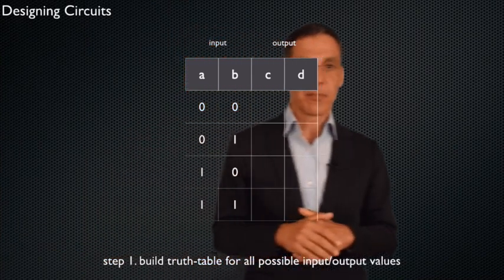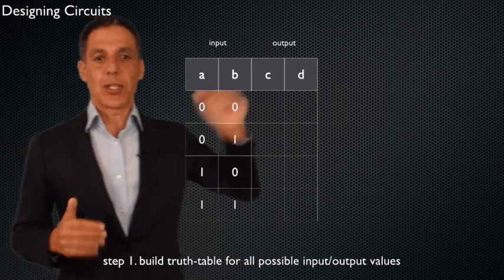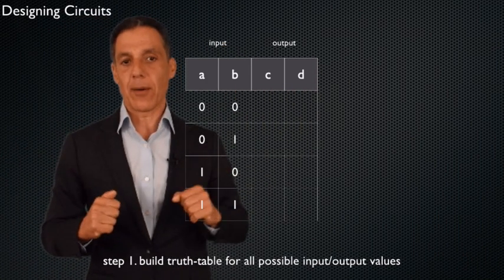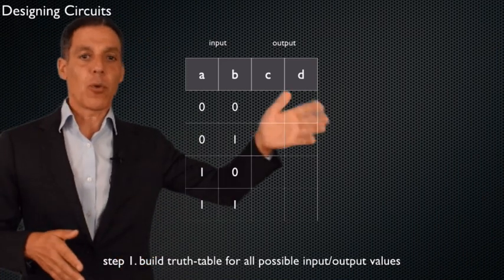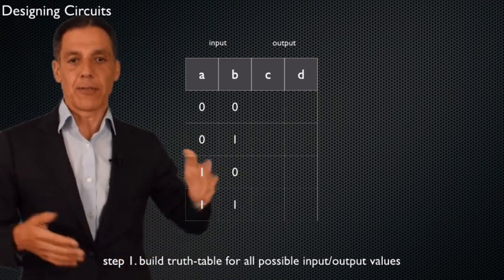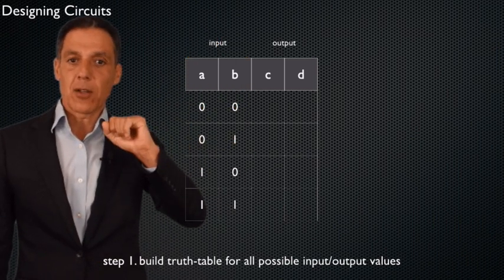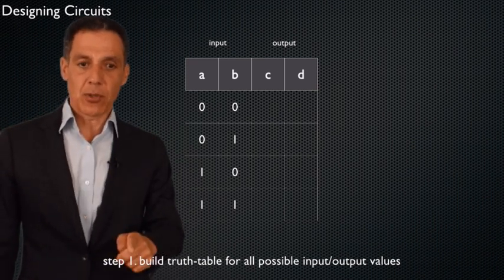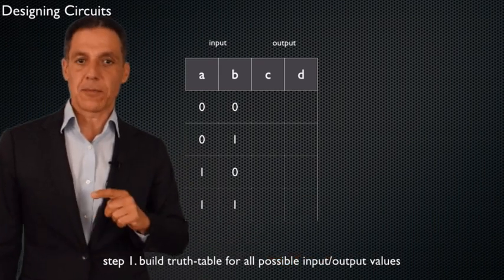We're going to see examples on really meaningful computations that you might see on a modern computer. The first thing we're going to do is ask ourselves: what is the input and what is the output? So the first step is to build the truth table for all possible input-output values.